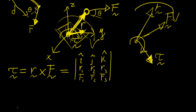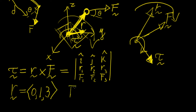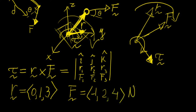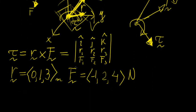Let's work through an example. Let the position vector be r = (0, 1, 3) meters, and the applied force be F = (-1, 2, 4) newtons. What is the resulting torque?